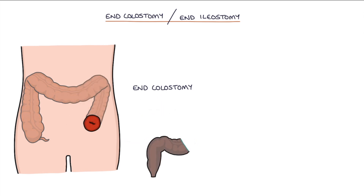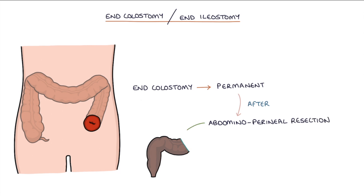End colostomies will be permanent after an abdominoperineal resection, or APR, because the entire rectum and anus have been removed. End colostomies after an APR procedure are usually located in the lower left abdomen.